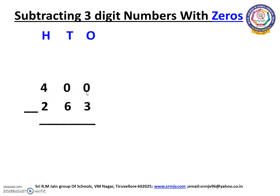Whenever we start the sum we have to start from the 1's place. In the 1's place we have 0 and 3. We cannot subtract 3 from 0, so we are going to borrow from the 10's place. In the 10's place we also have 0, so we cannot borrow. We have to move to the 100's place. Here we have 4.